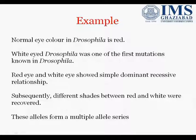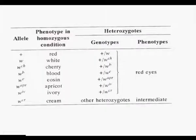Besides these two forms — red (dominant) and white (recessive) — there are different shades between red and white. These shades are represented by different alleles, and they form a multiple allele series. Among these, we have cherry, blurred, eocene, apricot, ivory, and many more different shades, each represented by a different allele. So more than these two alleles, we have a number of alleles present, which are called multiple alleles in the eye color of Drosophila.